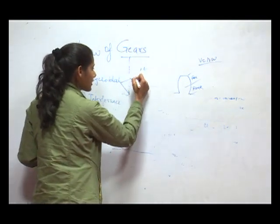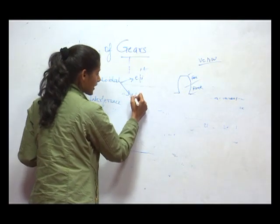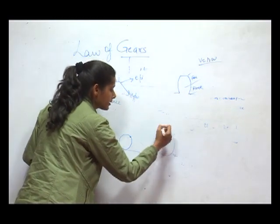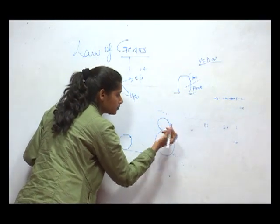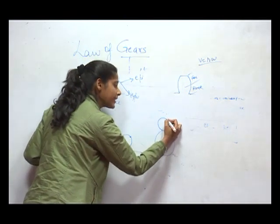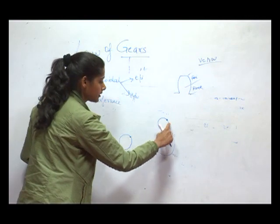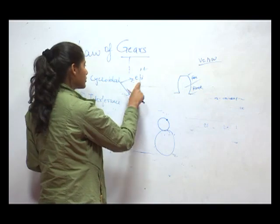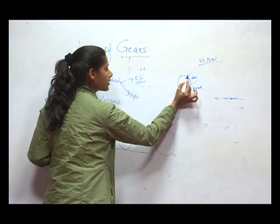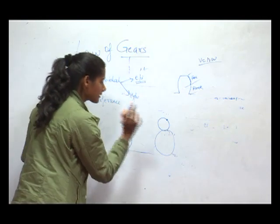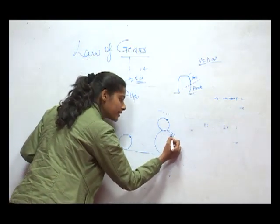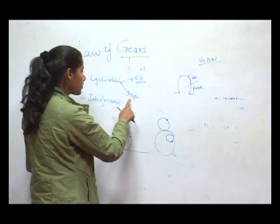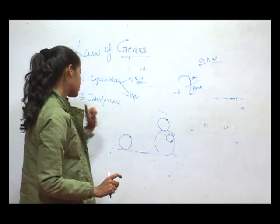Epicyclic means: if a circle rolls on the outside of another circle, the point traces an epicyclic profile. Hypocyclic means: if a circle rolls on the inside of another circle, the traced profile is hypocyclic.